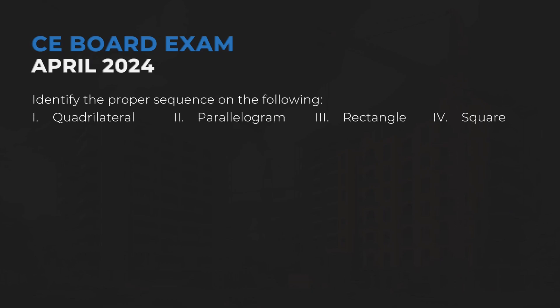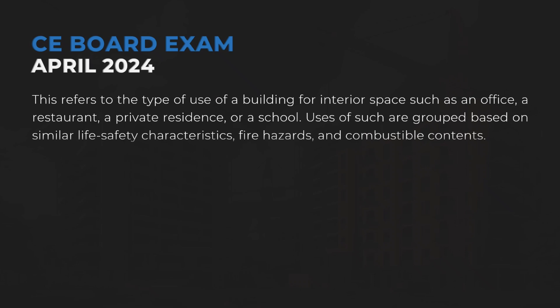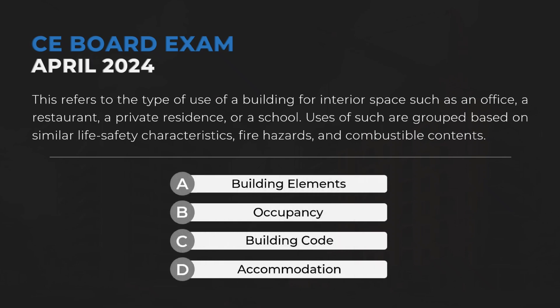Identify the proper sequence on the following: (1) quadrilateral, (2) parallelogram, (3) rectangle, (4) square. Answer: C — 4, 3, 2, 1. This refers to the type of use of a building for interior space such as an office, a restaurant, a private residence, or school. Uses of such are grouped based on similar life safety characteristics, fire hazards, and combustible contents. Answer: B — Occupancy.